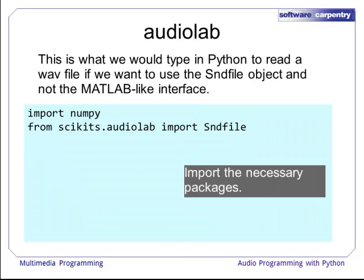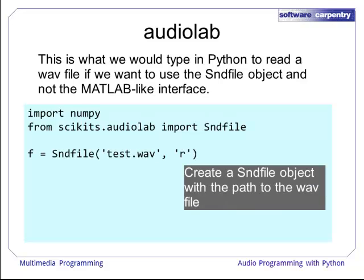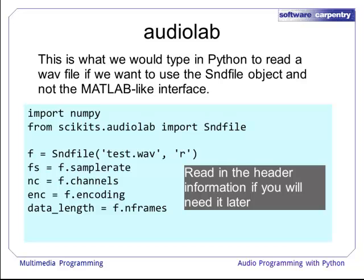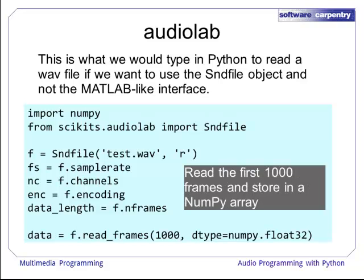AudioLab also has other ways to read in a Wave file if you don't want to use the MATLAB-like interface — you can instead use the sound file object. You would import the necessary packages, then create a sound file object with the path to the Wave file. Notice the character 'R' as the second argument, indicating you're reading a file. You can then read header information such as the sample rate, number of channels, encoding type, and number of frames available. We can then read in a section of audio data — here reading 1,000 frames and storing it in a NumPy array called data, declaring the dtype as NumPy float32.